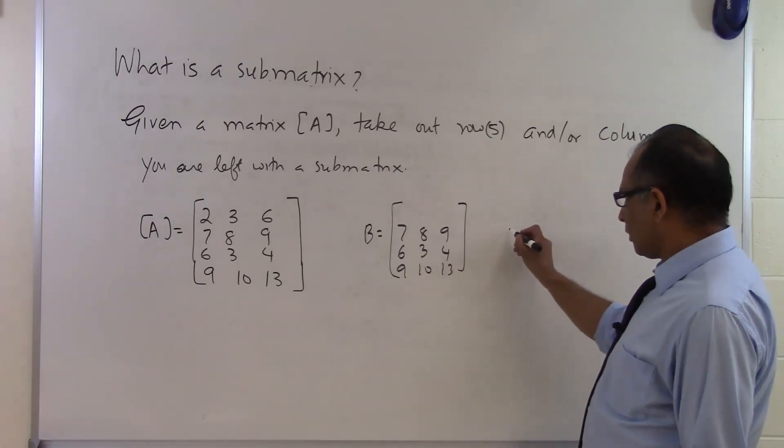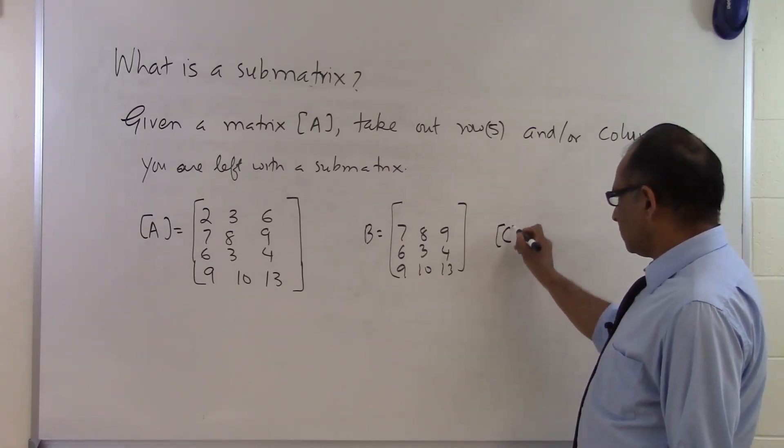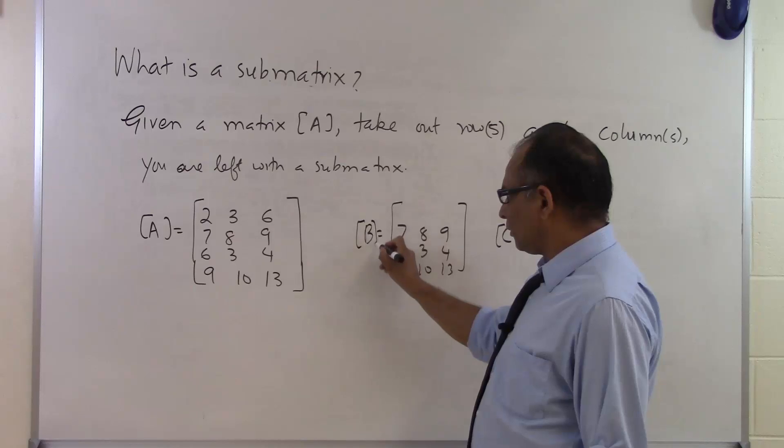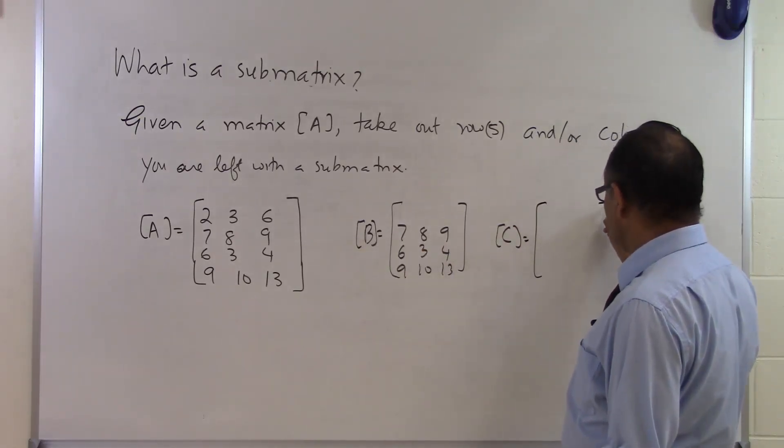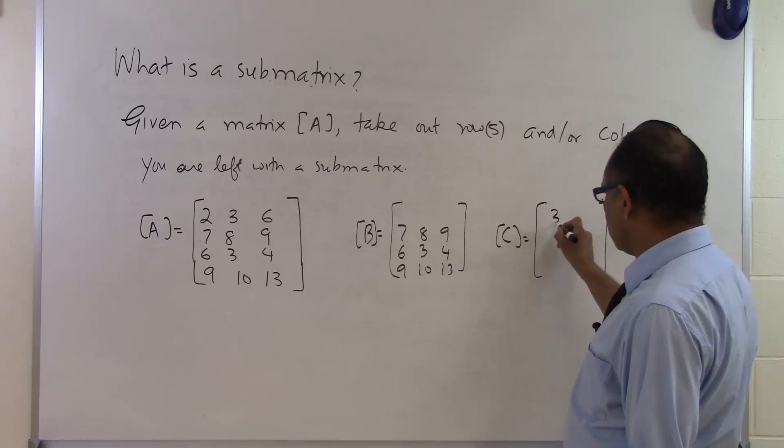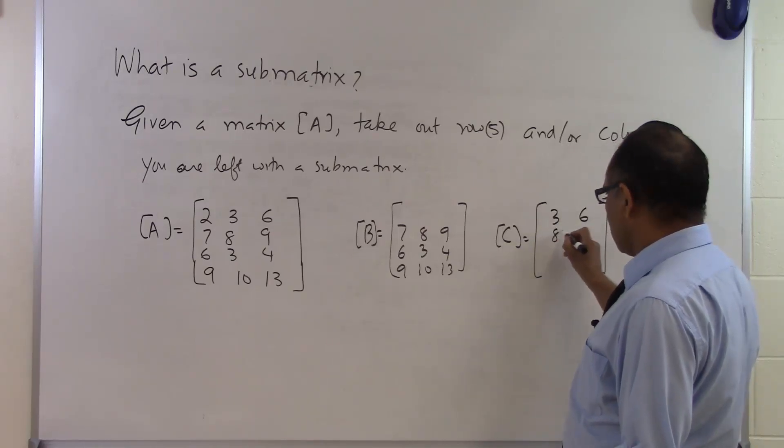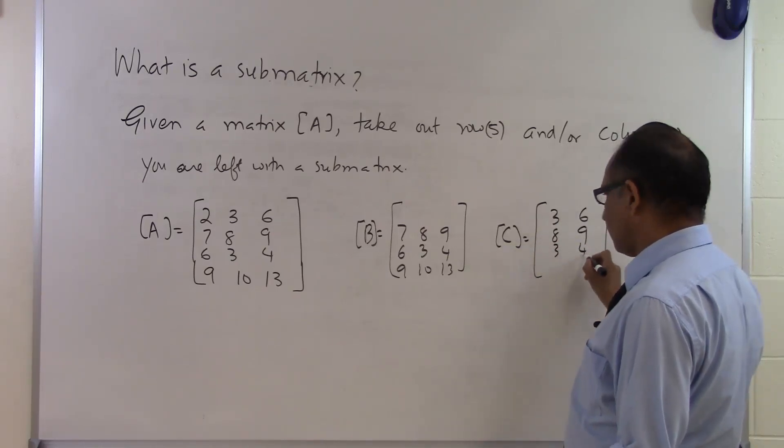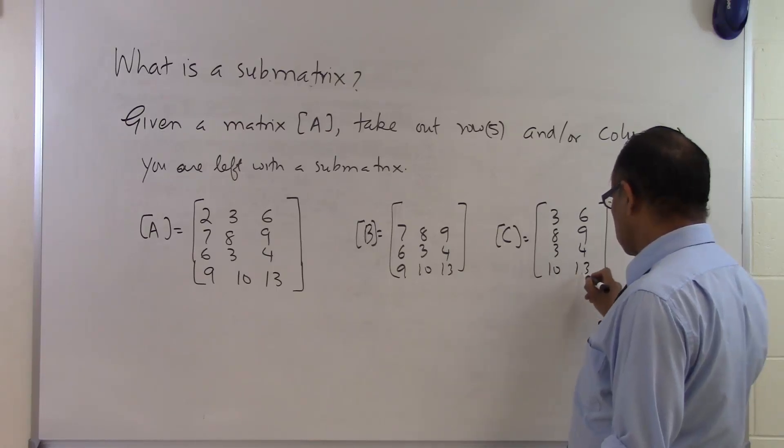And somebody says oh get rid of the first column, then my submatrix here C of A would be, if somebody says get rid of the first column would be 3, 6, 8, 9, 3, 4, 10, 13. Like that.